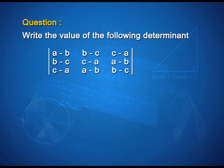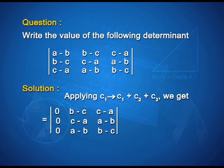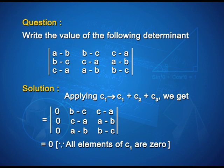Write the value of the following determinant: |a-b, b-c, c-a; b-c, c-a, a-b; c-a, a-b, b-c|. For the solution, we apply C1 → C1 + C2 + C3. We get a first column of all zeros: [0; 0; 0]. Since all elements of the first column are 0, the determinant equals 0.